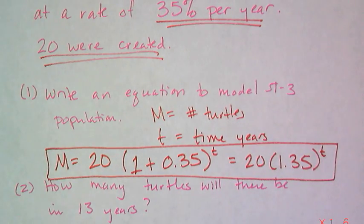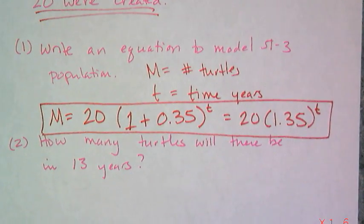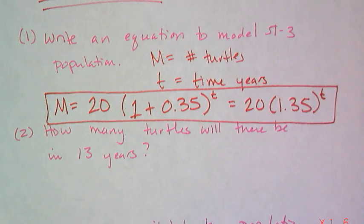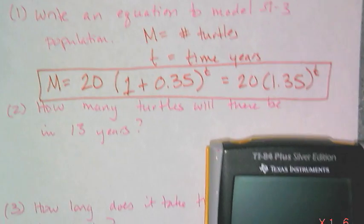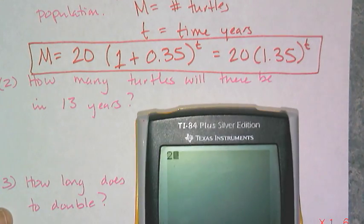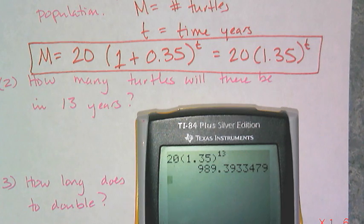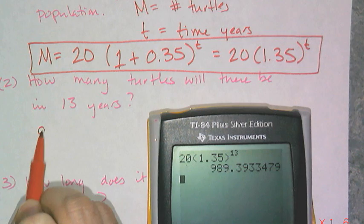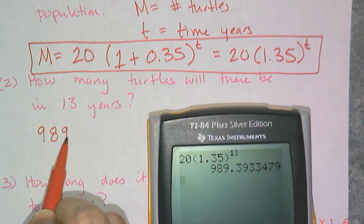And so now let's use our model to make some predictions about the population. So the first thing is, how many turtles will there be in 13 years? Now I don't need the table function to answer this question. I just need a calculator with exponent. So I can type in 20 times 1.35 raised to the 13, because it's after 13 years. And I'm going to get 989.39. Now we can't have 0.39 of a turtle, so we're going to go ahead and round that to 989 turtles.